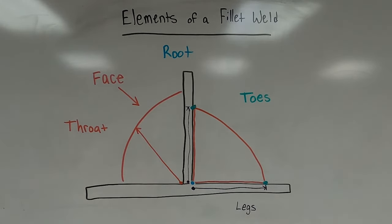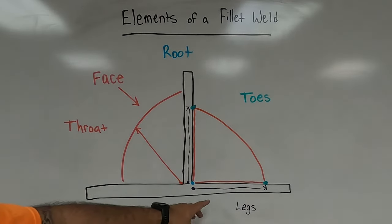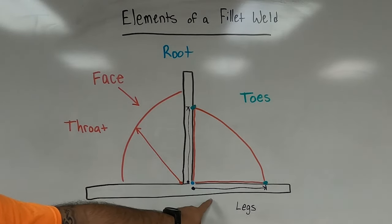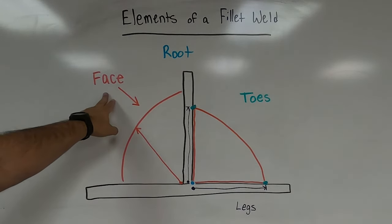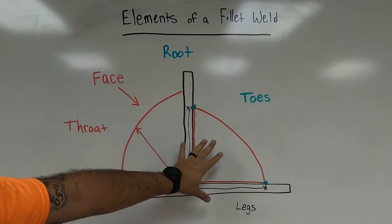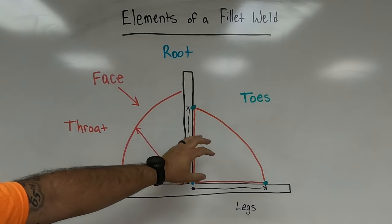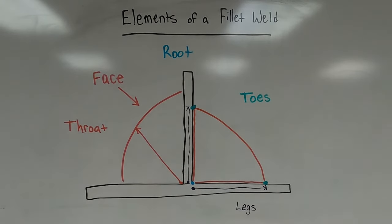When we start looking at additional information on a welding symbol — for example, weld size — this is where knowing legs, toes, throat, and face becomes important. All of this comes together to help us judge whether we're making an appropriately sized weld — whether it's too big or too small.